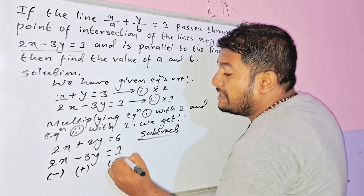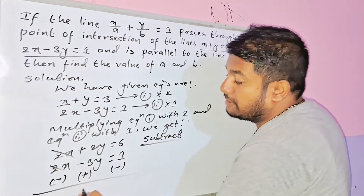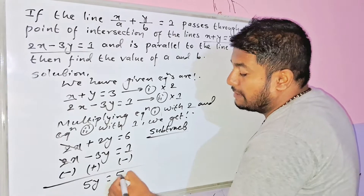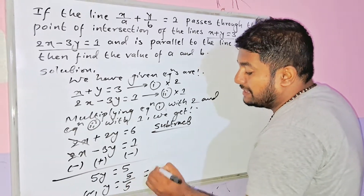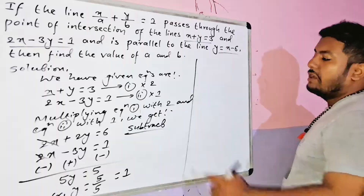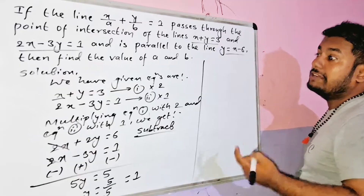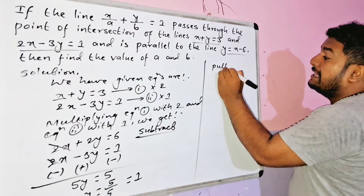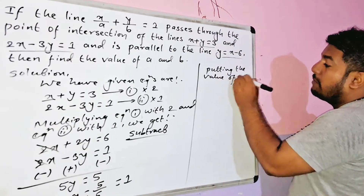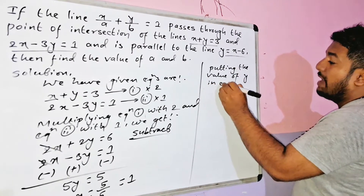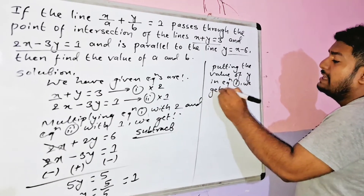After multiplying and subtracting, 2x cancels. We get 2y + 3y = 5y, equal to 6 - 1 = 5. So y = 5/5, therefore y = 1.